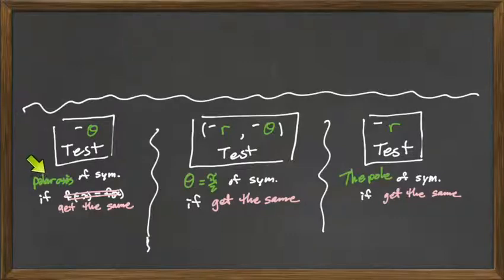It's gonna be polar axis of symmetry. This one is, polar axis is kind of like an x-axis. Okay, theta equals pi over 2 of symmetry. Well that's kind of weird. And then the pole, that replaces the origin of symmetry. The pole is kind of like the origin.